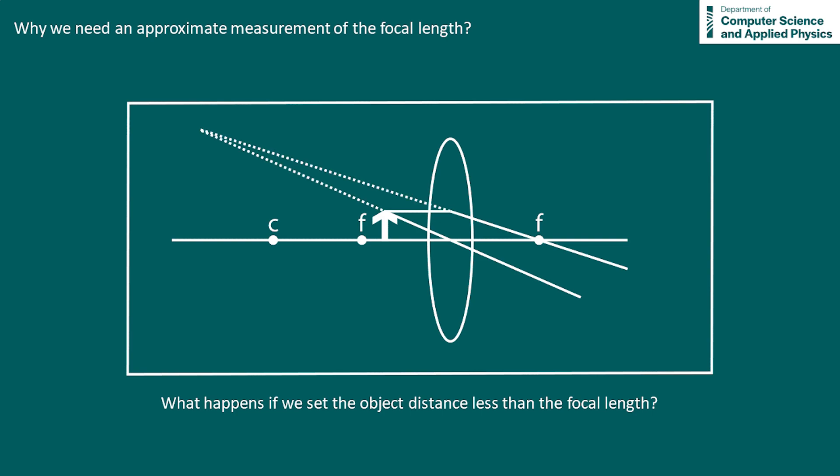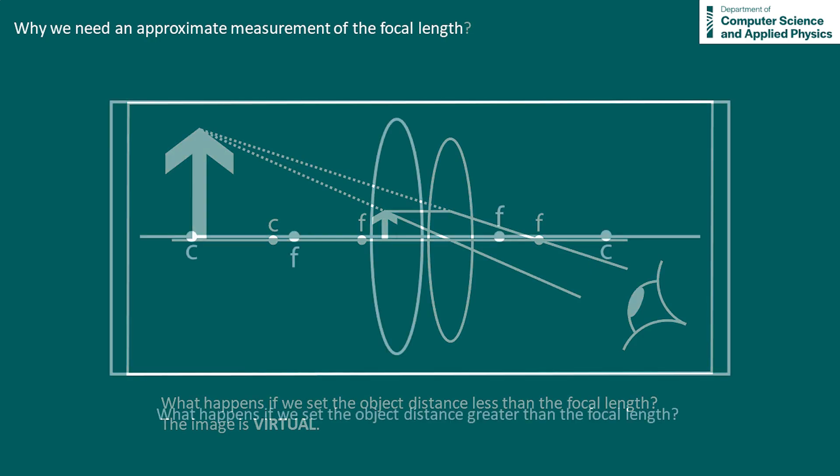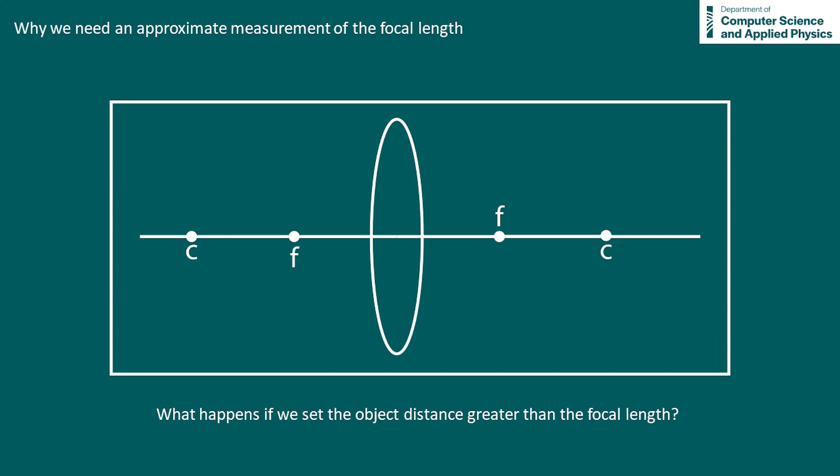What we'll end up with is a virtual image, and we won't be able to get an image on our screen to do our experiment. This is actually how a magnifying glass works. Whereas if we put the object at a distance greater than the focal length, from our ray diagram you can see that the rays do actually meet. We will get a real image that is also inverted.